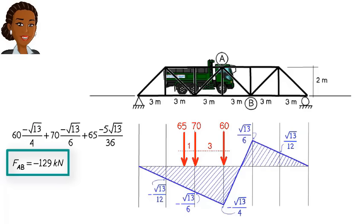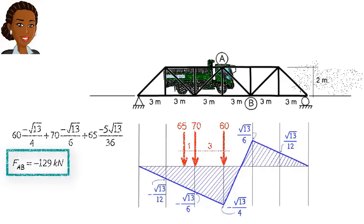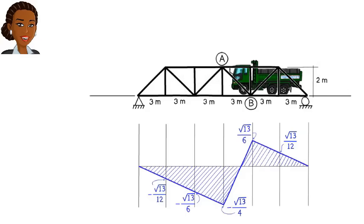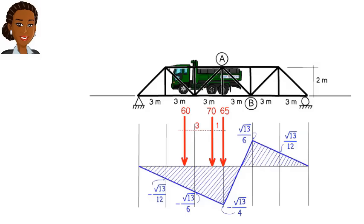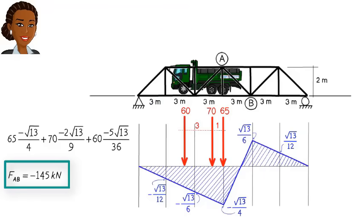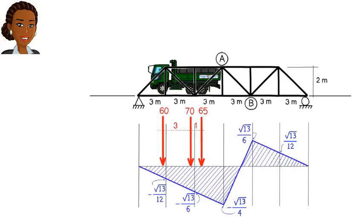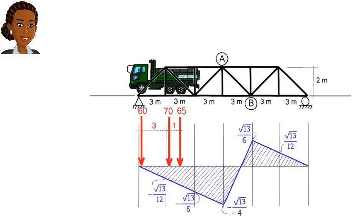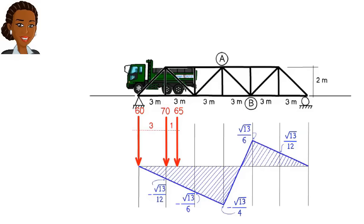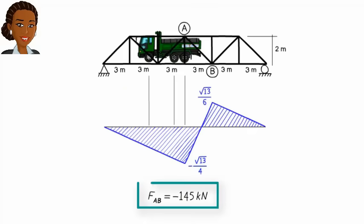So, are we done here? Did we find the largest possible compressive force in AB? Not quite. What if the truck is moving in the opposite direction? Would that cause different load patterns and perhaps a larger compressive force in the member? Let's investigate. If we change the truck's direction of travel and place the vehicle here, we get this configuration for the load series. Under this loading scenario, the compressive force in AB comes out to be 145 kilonewtons. As the truck moves forward like this, we can deduce that the axial force in AB becomes smaller and smaller, since the influence line values associated with the load series become smaller and smaller in magnitude. Therefore, we can safely conclude that the largest compressive force in AB is 145 kilonewtons. This force develops when the truck is in this direction and location.